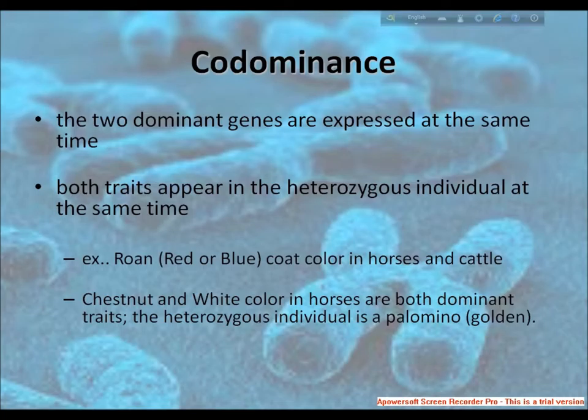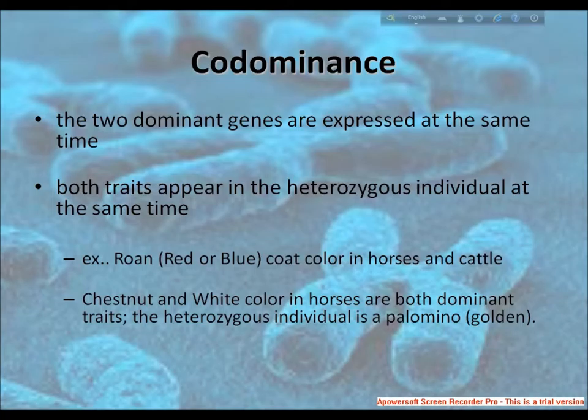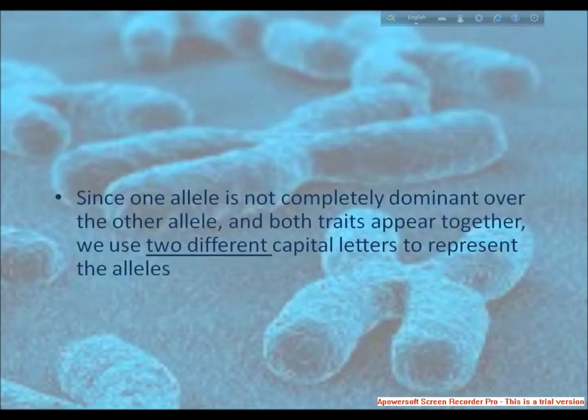Now I come to co-dominance. Alleles that lack a dominant and recessive relationship and are both observed phenotypically to the same degree are called co-dominant. The phenotypic effect of each allele is observed in the heterozygous condition, and the heterozygous genotype gives rise to a phenotype distinctly different from that of the homozygous genotype. Since one allele is not completely dominant over the other and both traits appear together, we use two dominant capital letters to represent the alleles.